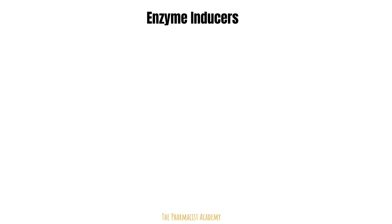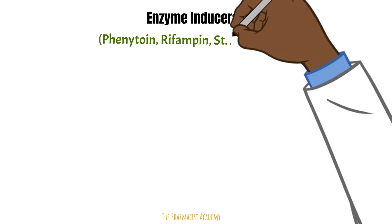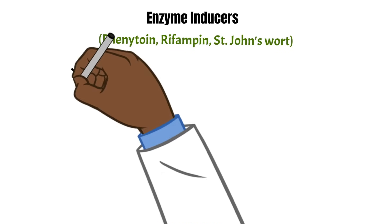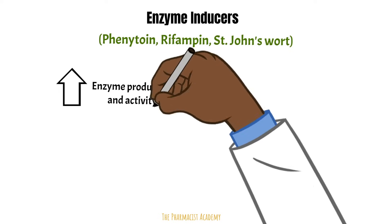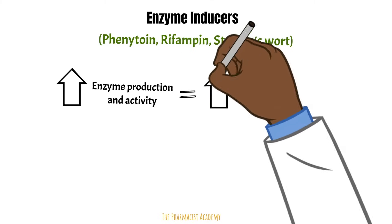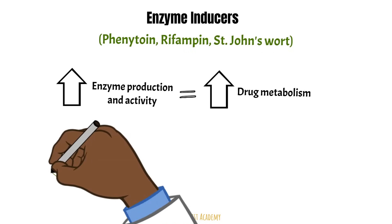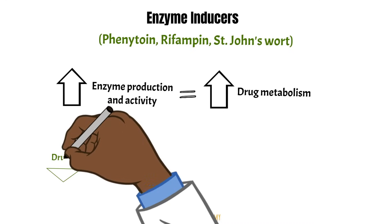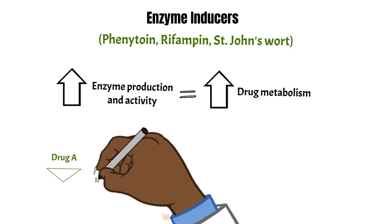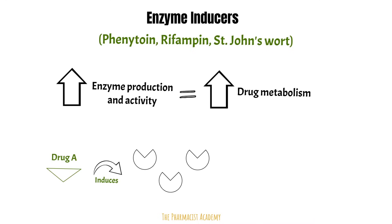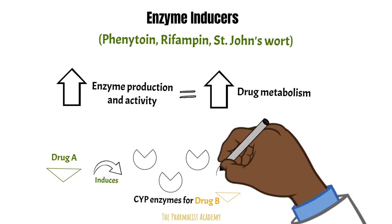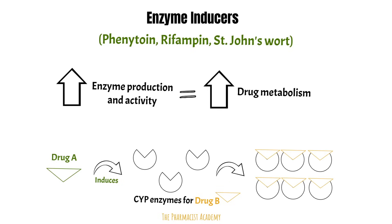Drugs can affect the activity of the CYP enzymes, and the effects can be characterized as strong, moderate, or weak. For the inducers, here are some examples of three strong inducers. When a drug induces the CYP enzymes it increases the production and activity of the enzymes, which will result in an increase in drug metabolism for that specific drug that binds to the enzyme. For example, drug A is a CYP enzyme inducer — when you take this drug it will act on the CYP enzymes that normally break down drug B, leading to an increase in enzyme production and activity, so more drug B will be metabolized.